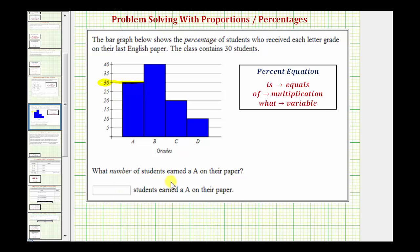So to determine the number of students that earn an A on their paper, we want to answer the question, what is 30 percent of the number of students, which is 30.